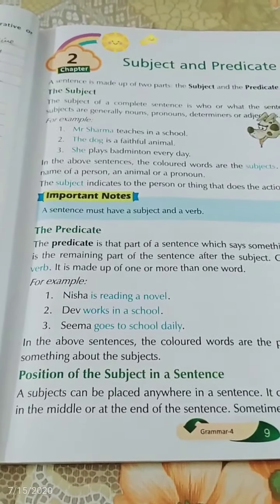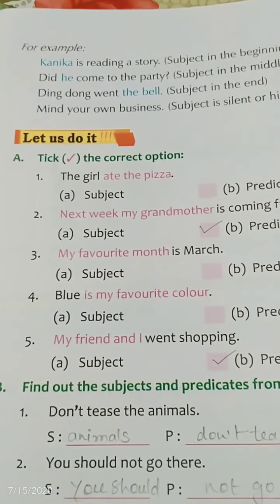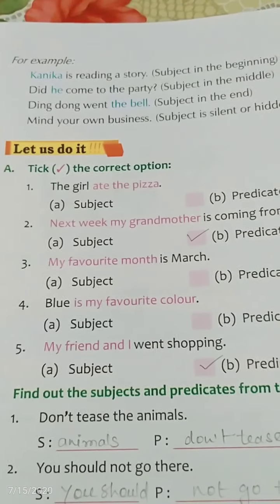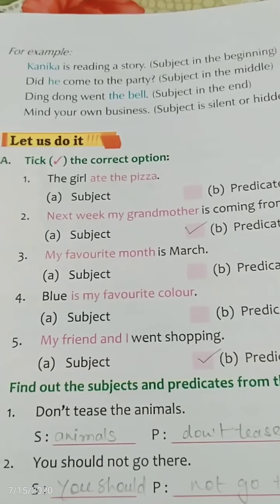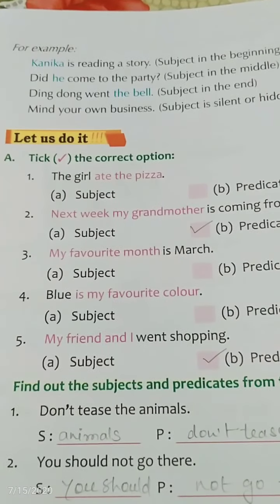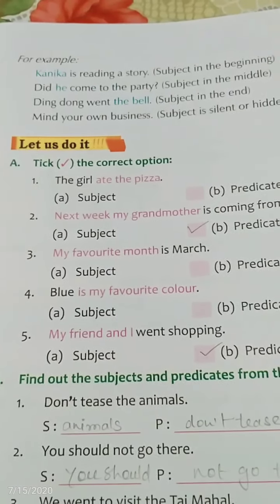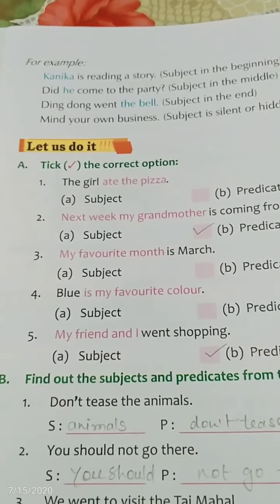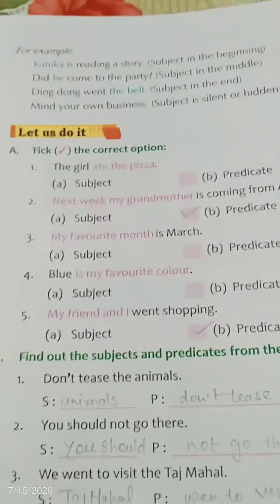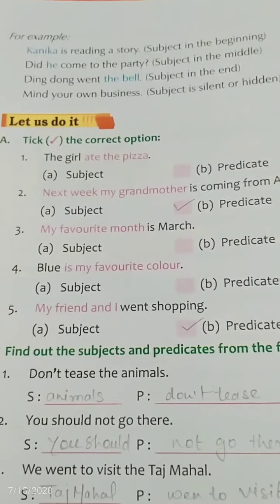Third example: 'Ding dong rang the bell.' The bell is the subject and it comes at the end, so the subject is at the end of the sentence. 'Mind your own business' — here the subject is silent or hidden. 'Own' is also used for a person, meaning a person should do their own work.